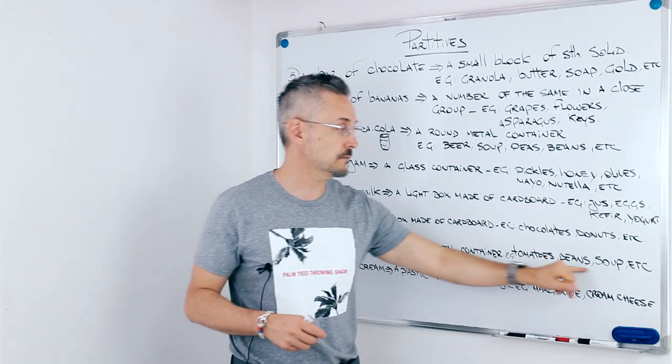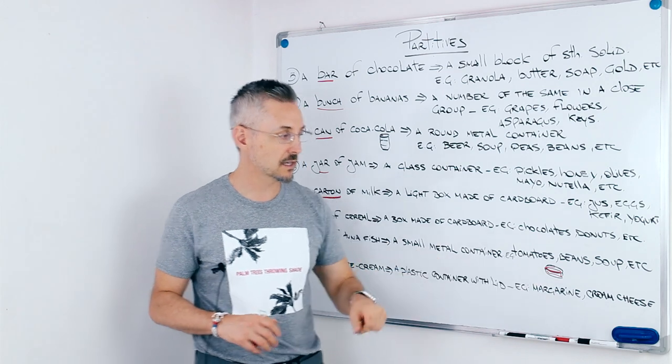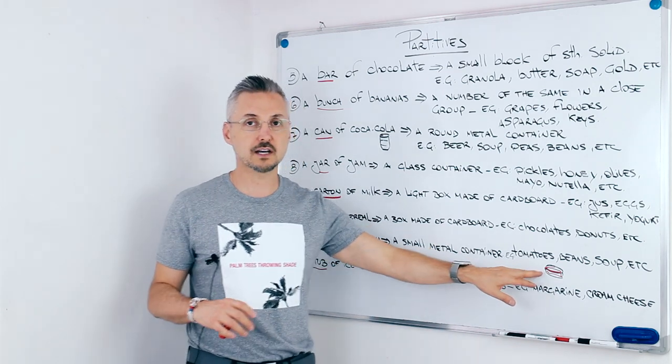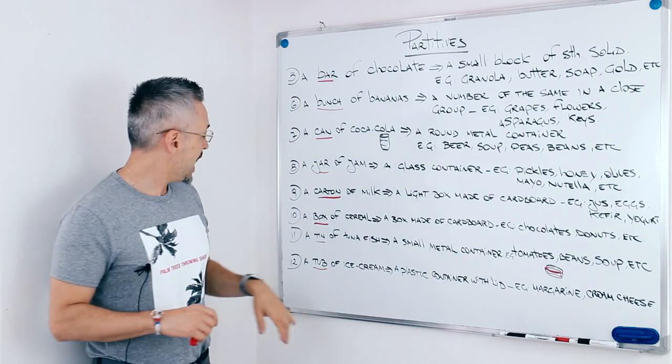A tin of tomatoes, a tin of beans, a tin of soup, etc. And it's usually flat. I tried to draw it, but I don't know if you can see it.